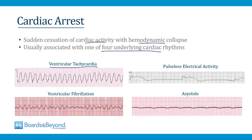The first rhythm is ventricular tachycardia. The second is ventricular fibrillation. The third is called pulseless electrical activity or PEA, which means that QRS complexes are being generated but there is no pulse — that's why it's called pulseless. The final one is called asystole. Patients who have any pathologic process that leads to one of these four rhythms will often collapse, and that's called a cardiac arrest.